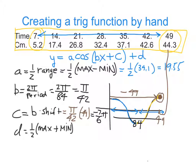And then we're on to just the last calculation, figuring out what D is worth. D would be half of the max plus the min, which would be the average of the highest and lowest point. So the highest point was at 44.3, the lowest point was at 5.2 centimeters. So half of those added together comes out to be 24.75.